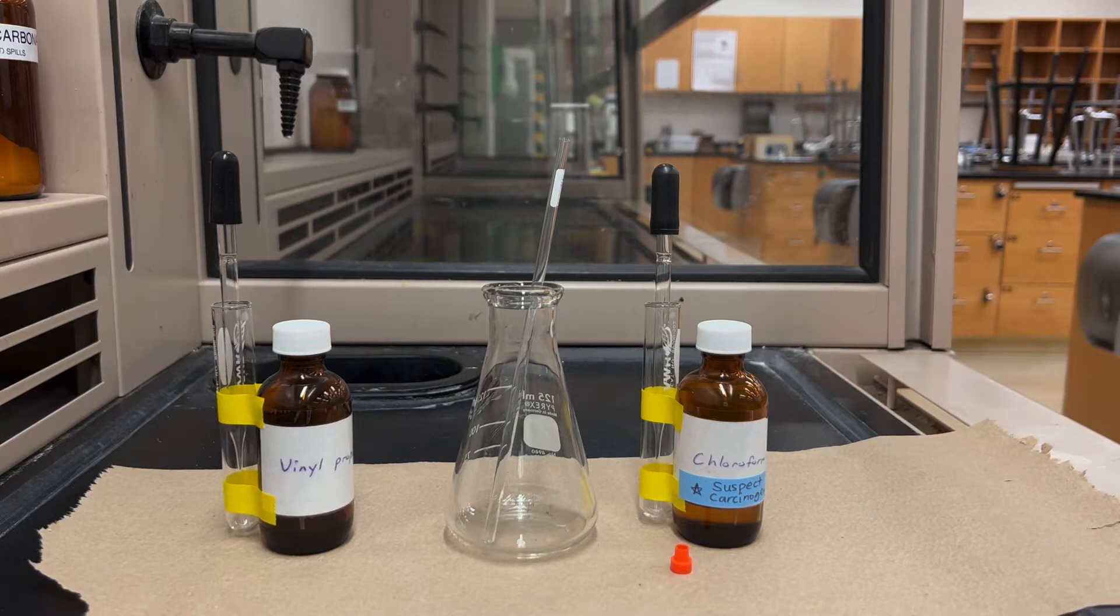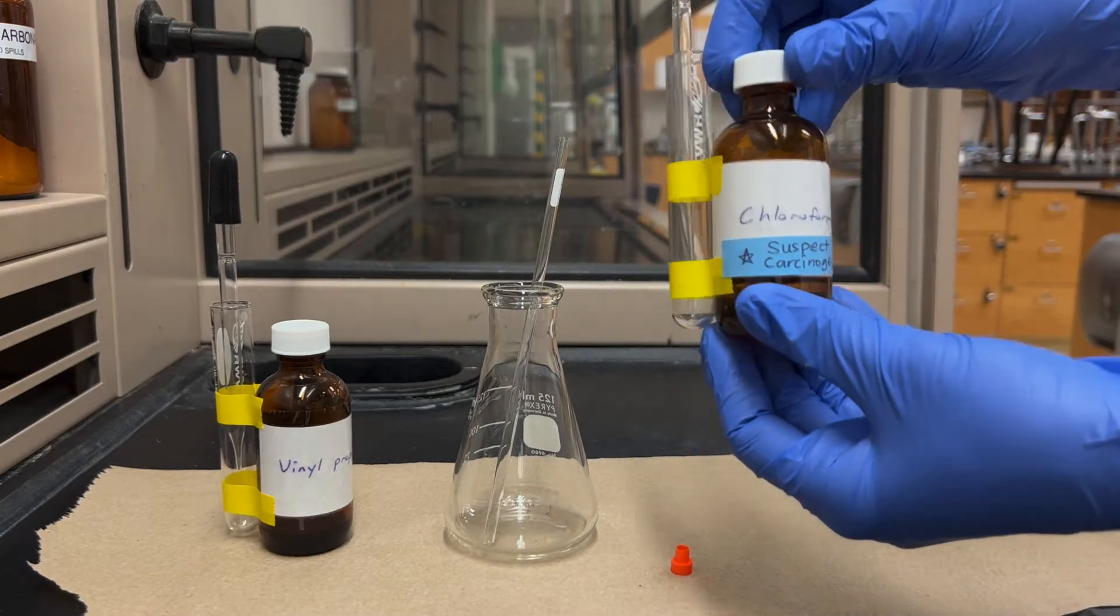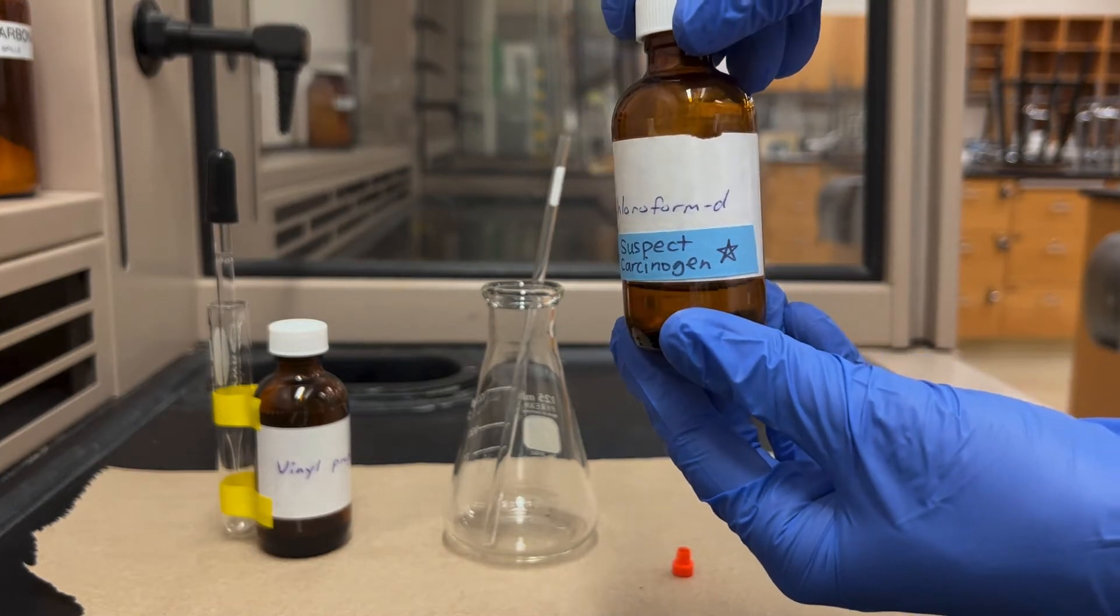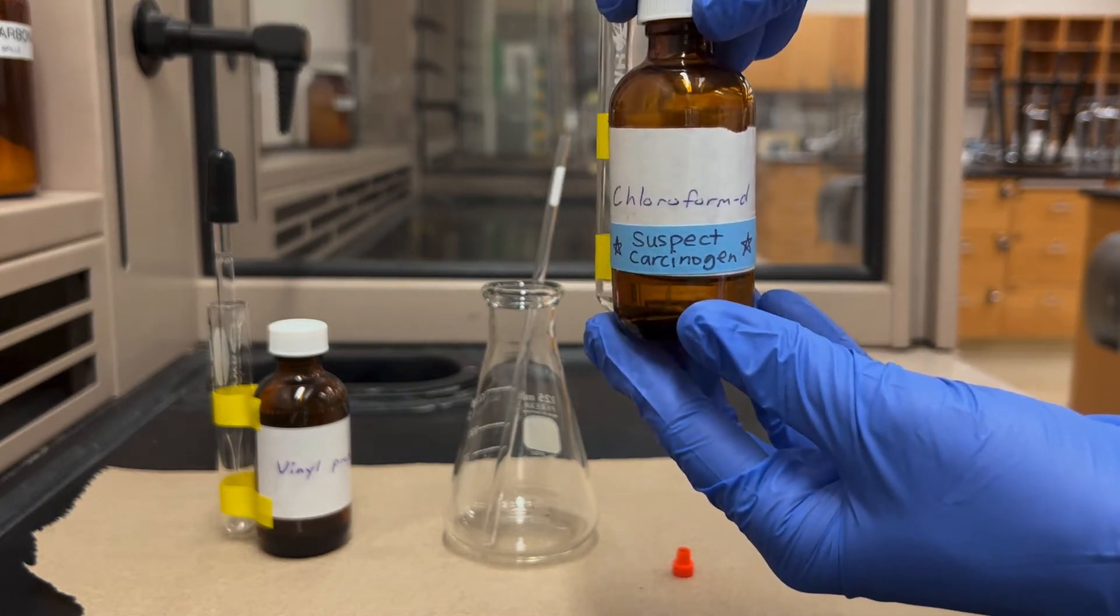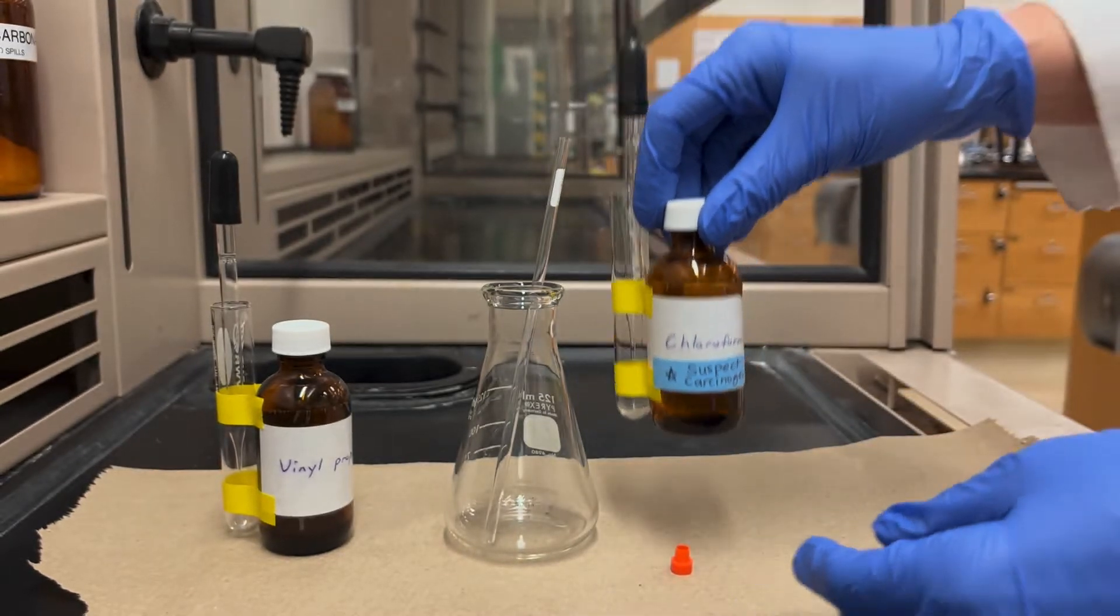I'll first put a clean NMR tube into an Erlenmeyer for support and next I'm going to add my deuterated solvent. I'm going to use deuterochloroform or CDCl3. It's a really common solvent for NMR but this is a pretty hazardous material. It's a suspect carcinogen, so when working with this you do want to wear gloves and work in the fume hood.